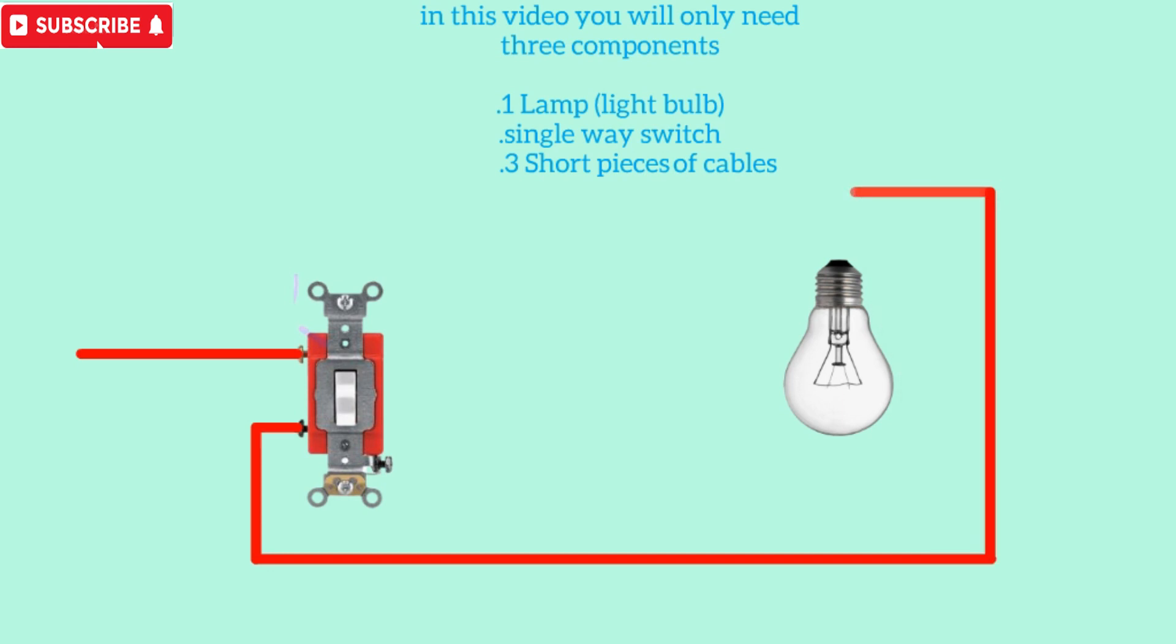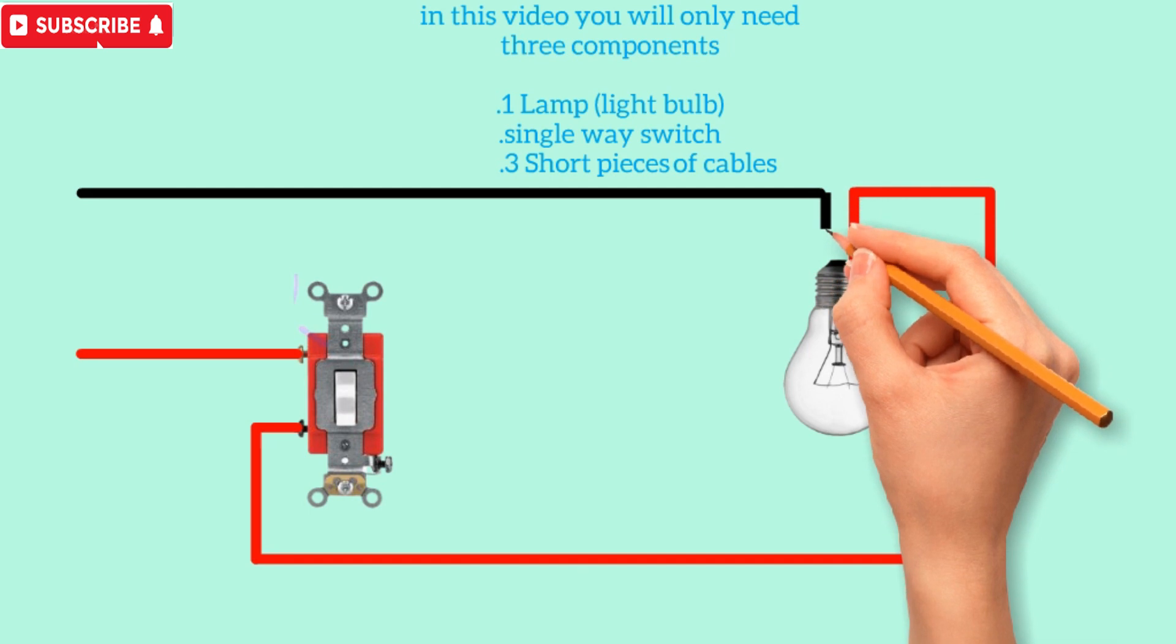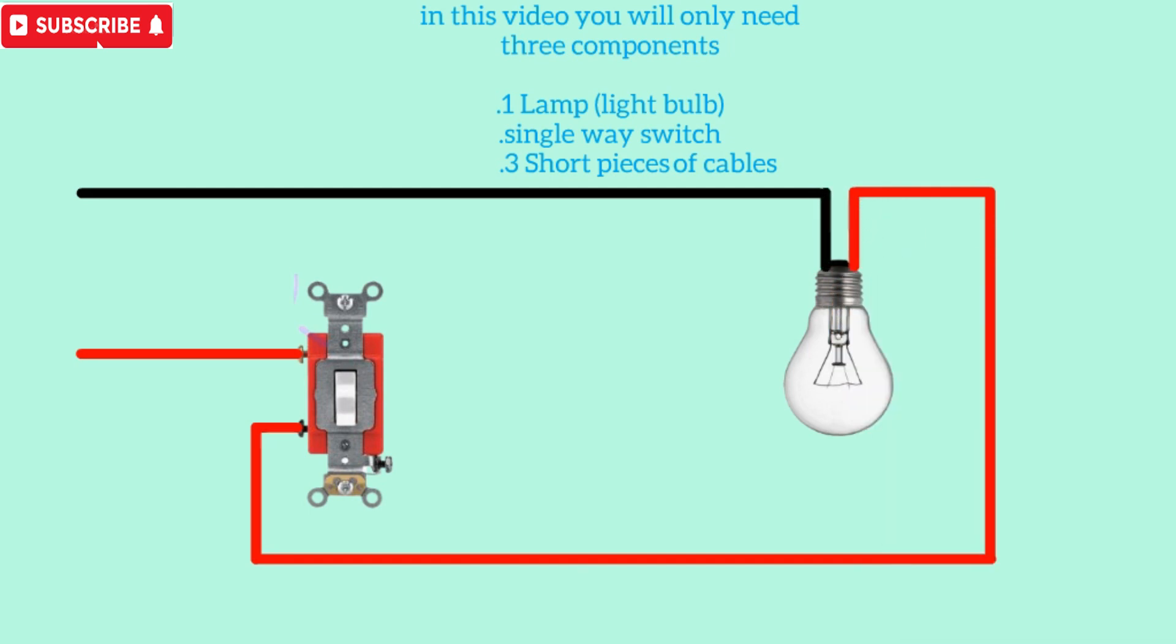The live wire should then be connected to the switch as illustrated in the following figure. The circuit behaves like an open circuit when the switch is turned off, and the bulb won't illuminate. Switch S1 must be closed in order to complete the circuit and light the light bulb.